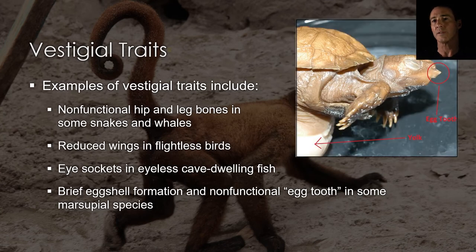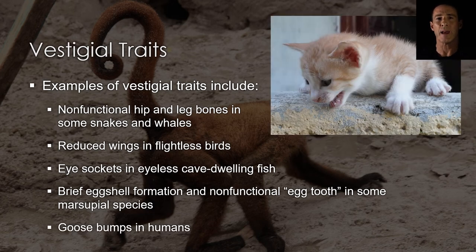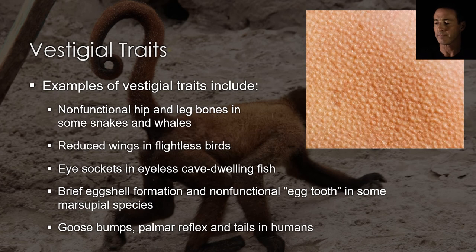In some species, newborns have a non-functioning egg tooth like those used by birds and reptiles to break open their shells. And many mammals, including primates, are able to erect their hair when they are cold or excited. This behavior manifests as goosebumps in humans, which are largely ineffective in warming us or signaling our emotional state.